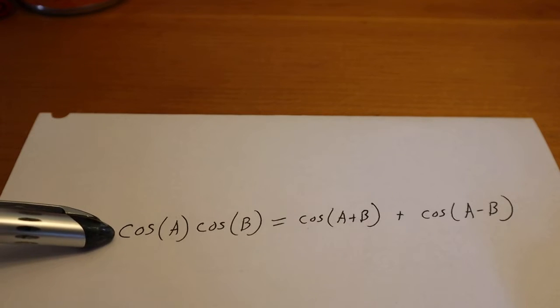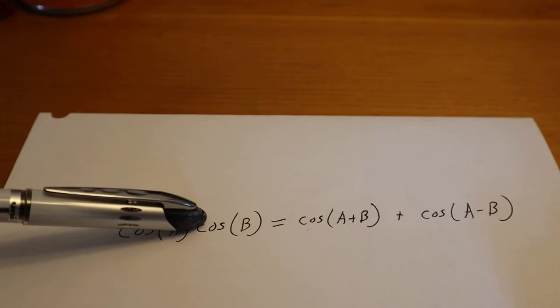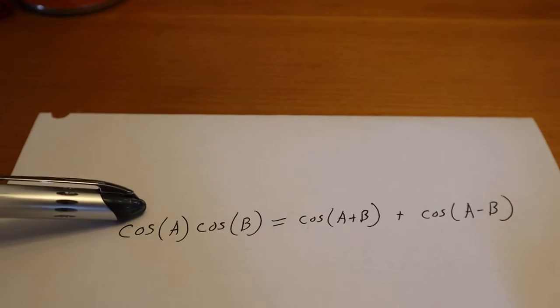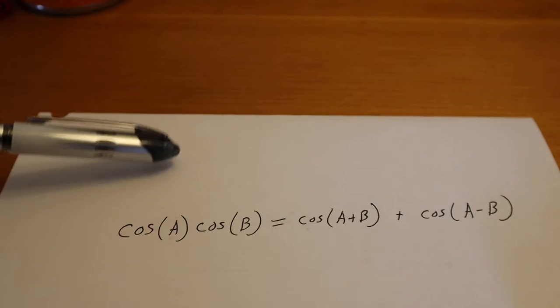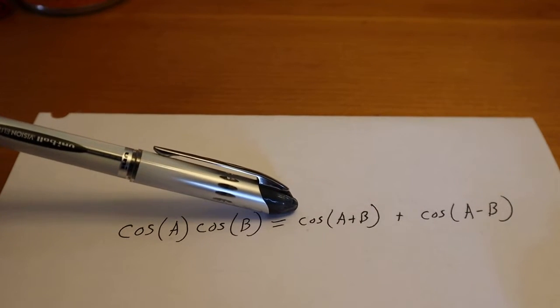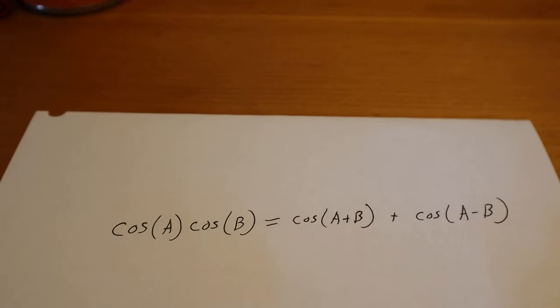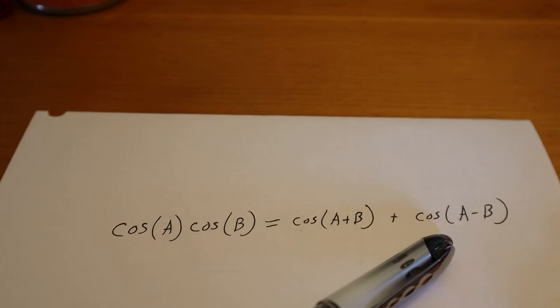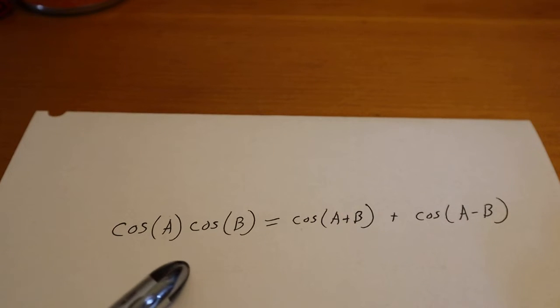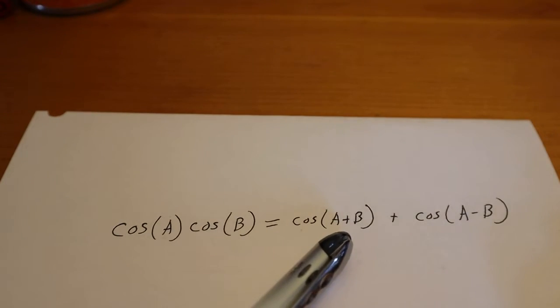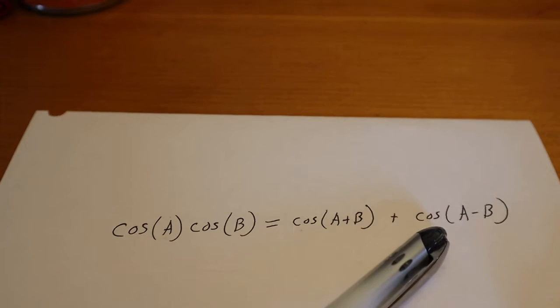The idea says, if I have a cosine wave A and a cosine wave B, and I multiply them together, the product is going to be the sum as well as the difference. And that's key right there, the difference. It basically says if we take two radio waves and multiply them together, we get the sum of the radio waves and the difference of the radio waves.